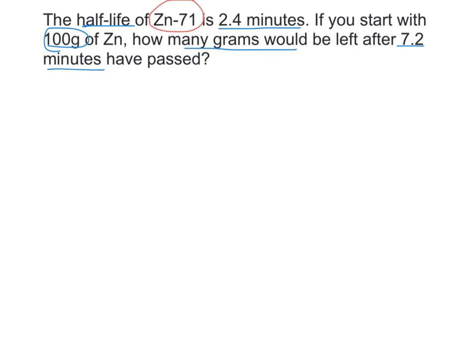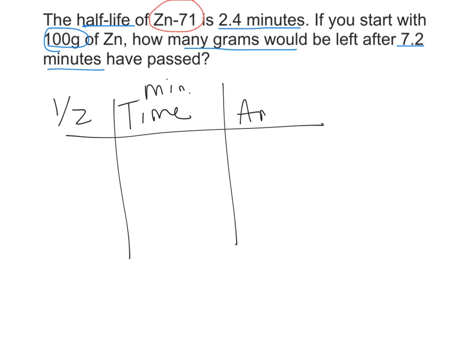The way I could set this problem up is I create my table and I write half-life, time in minutes, and amount in grams. Those are my units. I always begin half-life with zero and time with zero because when you count you always start with 0, 1, 2, 3. The amount is what they're giving me as 100 grams.